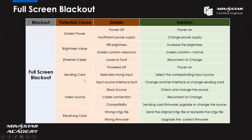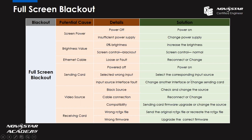For the sending card, first make sure it is powered on. Second, check if the wrong input is selected — for example, in the hardware structure we select HDMI as the input, but in the software maybe DVI or another input is chosen as the source. Make sure we select the corresponding input source. Also check the input source interface; if there is something wrong, change another interface. If there is not enough interface, we may need to change the sending card.